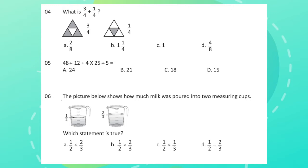Question 5: 48 divided by 12 plus 4 into 25 divided by 5. Question 6: The picture below shows how much milk was poured into two measuring cups. Which statement is true?